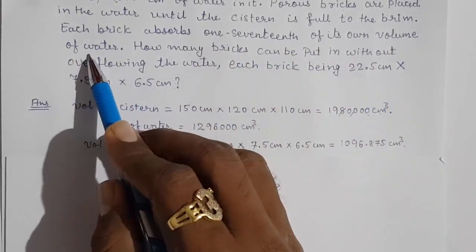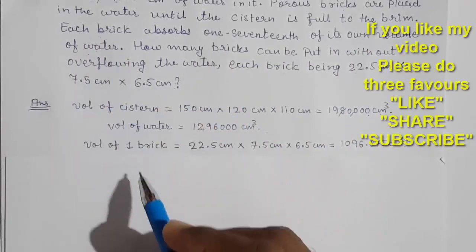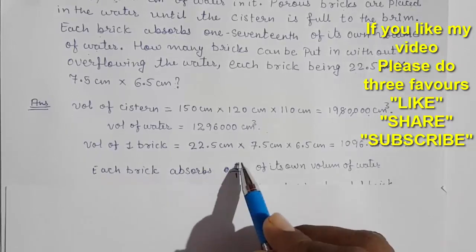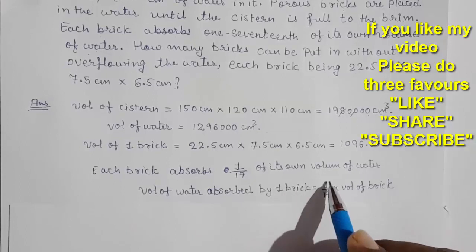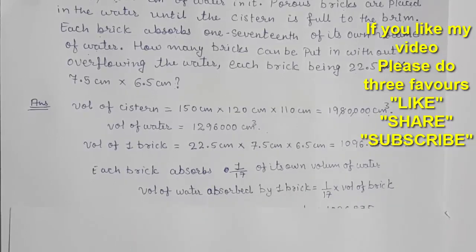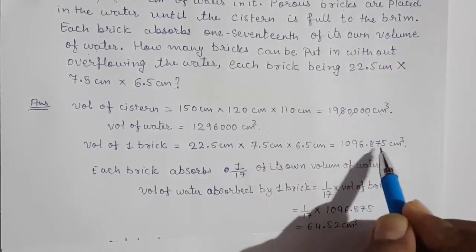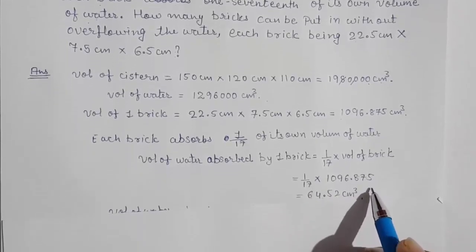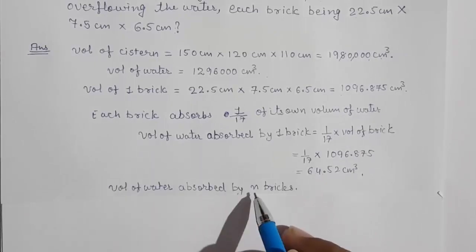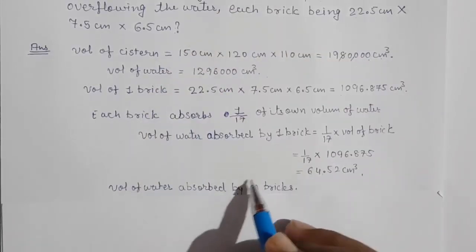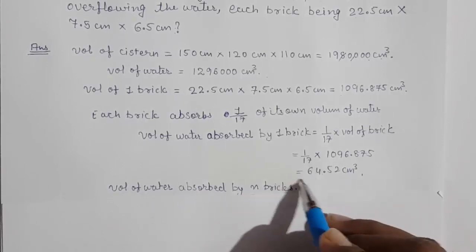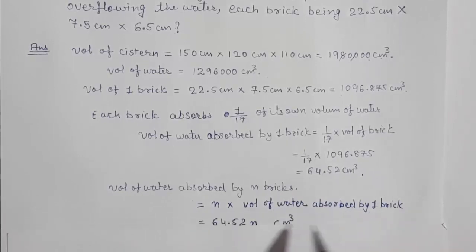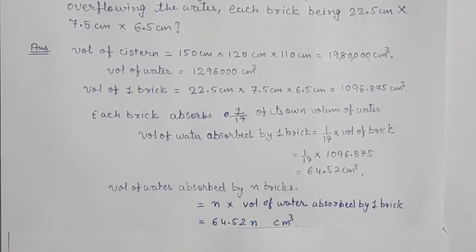Now, each brick absorbs 1/17th of its own volume of water. So the volume of water absorbed by one brick = (1/17) × volume of one brick = (1/17) × 1096.875 = 64.52 cm³. Now since we want to find the number of bricks, let us suppose there are n bricks. Volume of water absorbed by n bricks = 64.52 × n cm³.